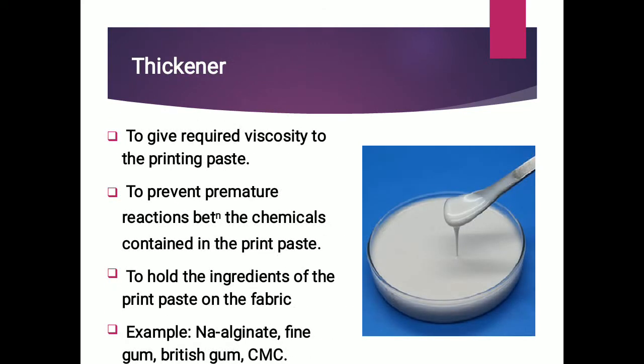Then we will see thickener. Thickener is a very compulsory auxiliary which is used in printing paste preparation. We will describe thickener, its classification, and its features in our next lecture. Here we will discuss it in brief. It gives the required viscosity to the printing paste and prevents premature reaction between chemicals contained in the printing paste. Examples include sodium alginate, CMC, British gum, and guar gum.